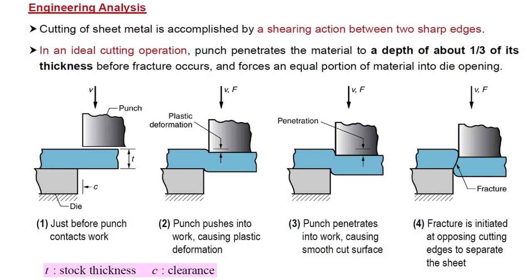Stage one shows the situation just before the punch contacts the work, which is shown in blue color held on the die. The second diagram shows the punch slightly pushing into the work, causing plastic deformation. In the third stage, the punch is penetrating the workpiece causing a smooth cut surface at velocity V and force F. In the fourth stage, a fracture is initiated at opposing cutting edges to separate the sheet.